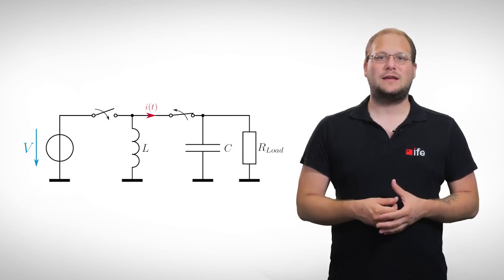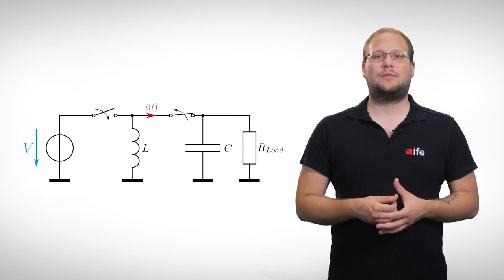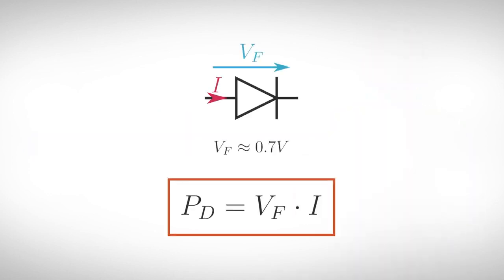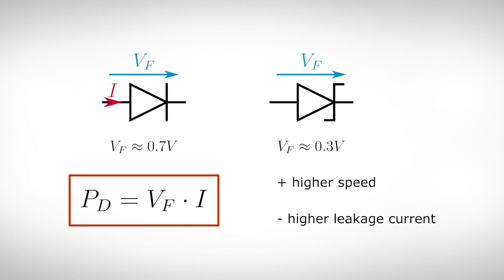In another video, we will see how we can control the output voltage and what other parts are important for our power supplies. Now we want to choose the right diode for our application. One problem is the voltage drop of a normal silicon diode of approximately 0.7V in forward direction. Multiplied with the current, this results in a power loss in the diode that lowers the efficiency of our power supply. One solution would be to replace the standard silicon diode with a so-called Schottky diode, which only has a voltage drop of about 0.3V in forward direction. As a bonus, Schottky diodes have a higher switching speed in general, but unfortunately they also have a higher leakage current in reverse direction.